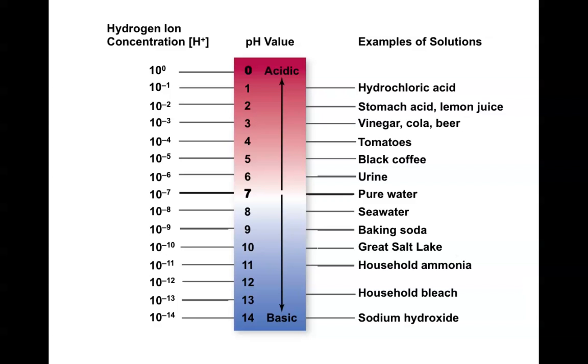You can see that decreasing the pH means an increased amount of hydrogen ions. Increases or decreases in the concentration of hydrogen ions is usually matched by the reverse change in the concentration of hydroxyl, or OH, ions.